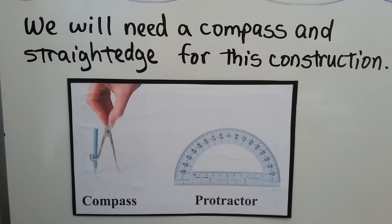To make this construction, we're going to need a compass and some type of straight edge, either the straight side of the protractor or a ruler.